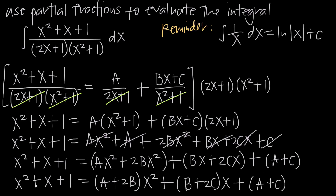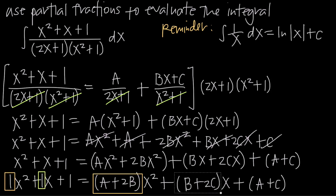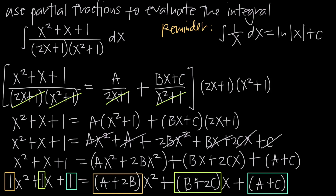On the left-hand side we have 1x squared plus 1x plus 1. We equate coefficients from the left and the right-hand side. The coefficient on x squared on the left is 1, and on the right is A plus 2B. The coefficient on x is 1 on the left and B plus 2C on the right. And the constant is 1 on the left and A plus C on the right. So we write: A plus 2B equals 1, B plus 2C equals 1, and A plus C equals 1.